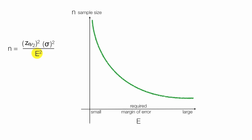The graph of sample size looks something like this. If I need or want a really small margin of error, I have to have a large sample size. On the other hand, if I'm okay with a large margin of error, I have a smaller sample size.